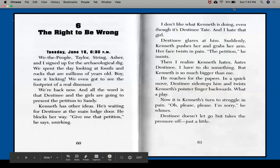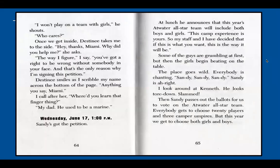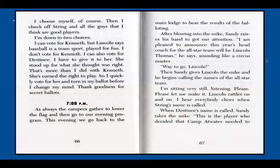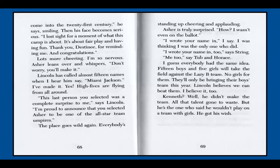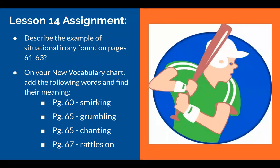So we're going to see the chapter — this is chapter six. Here's a recap: we're going to describe the example of situational irony that we found on pages 61 to 63. Hint hint, it has to do with Destiny Tate and Kenneth and what happens in their exchange. And then you're going to add the new vocabulary words to your chart: smirking, grumbling, chanting, and rattles on.